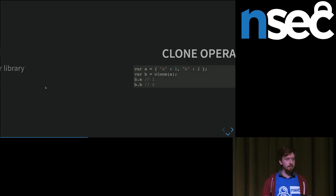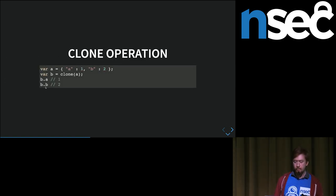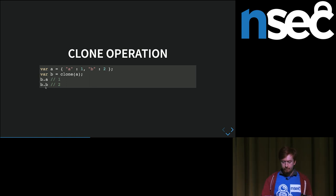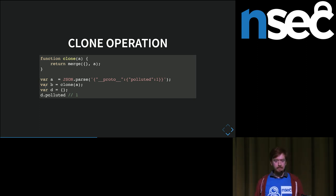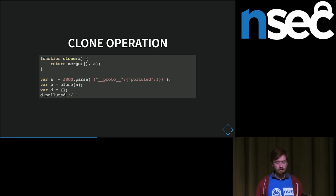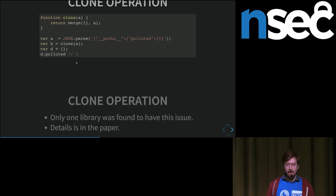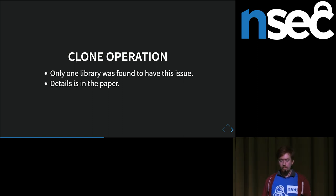The second class of operations susceptible to this problem are clone operations. A clone operation is basically: you have an object and you want to create a full copy of it. Some implementations are vulnerable if the clone is implemented as a merge onto an empty object. Basically it does a clone, but if the merge operation used is affected by the previously mentioned bug, the clone operation will also cause prototype pollution with the same effect. I only found one library affected this way, so this is probably a rather niche edge case.